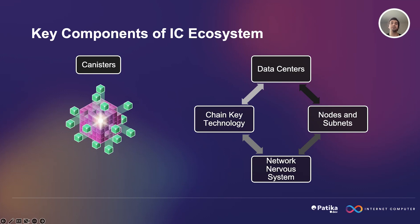Now let's look at the Network Nervous System. The Network Nervous System, also called the NNS, is a decentralized governance system that controls and manages the Internet Computer Network. The NNS is composed of neurons. Neurons can propose, vote on, and execute proposals that affect various aspects of the network, such as upgrading the protocol, creating new subnets, allocating resources, setting fees, and more. The NNS is designed to be adaptive, responsive, and transparent, allowing the network to evolve and improve over time.